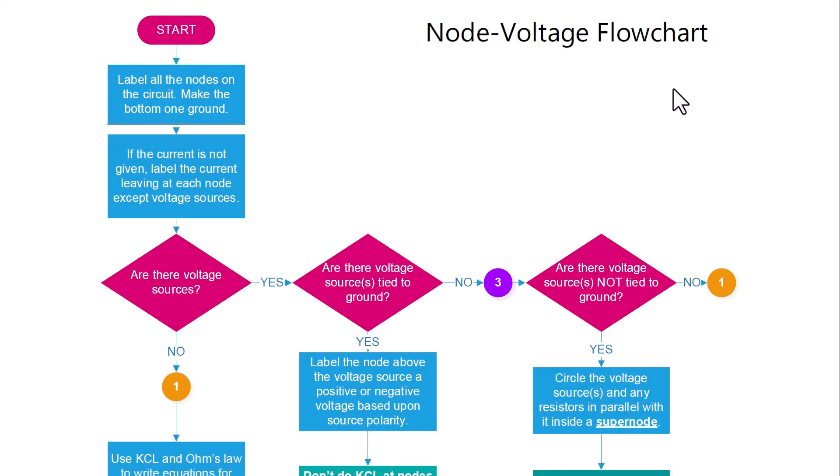Next we will examine the flowchart for the node voltage method. The first thing you're going to do is label all of the non-reference nodes — which means everything but ground — as a node variable like V1, V2, and V3, and then label ground at the bottom of the circuit. If the current is not given for a branch in the circuit, then we label the current leaving the node at each node so that we can label all the elements to obey the passive sign convention.